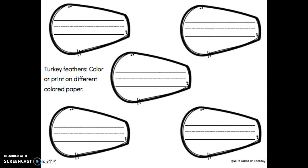When you are done coloring the turkey, next you are going to get your feathers. Your feathers have lines on them for you to write what you are thankful for. You have five feathers.